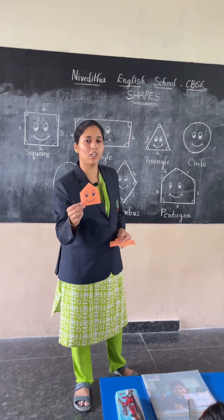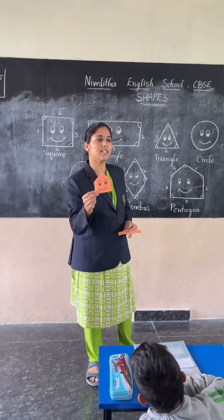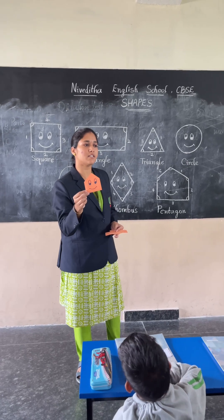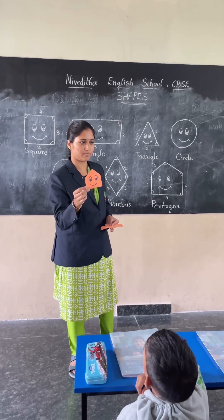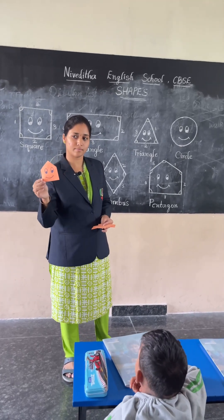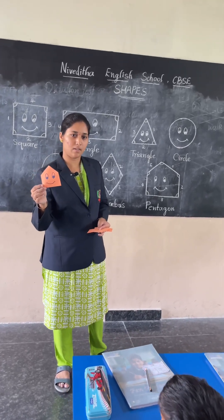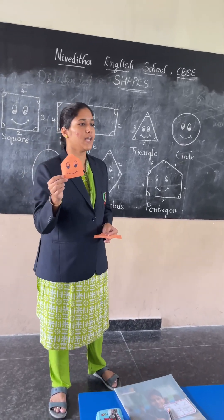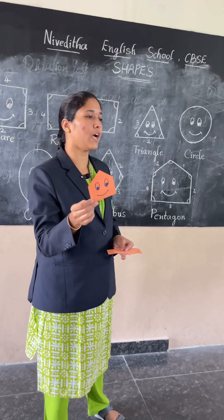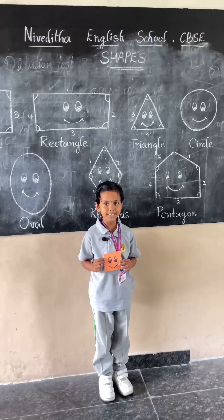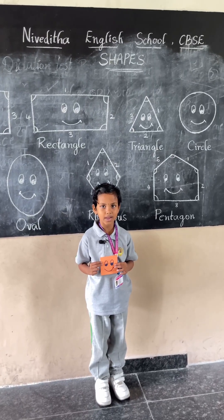This is a pentagon. It has how many sides? Five sides and five corners. This is a square.